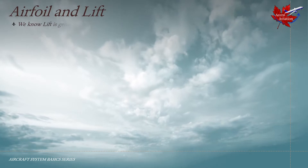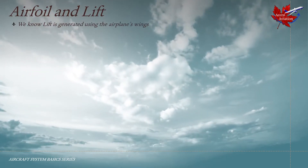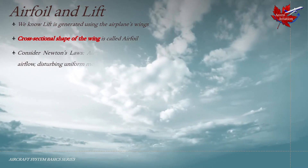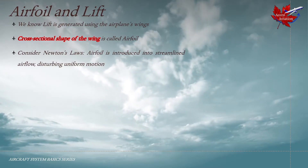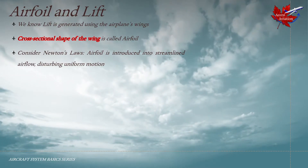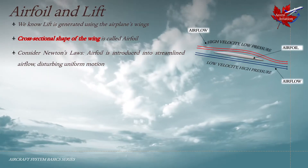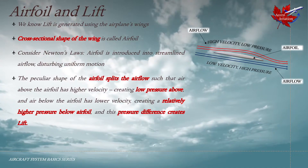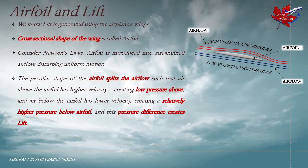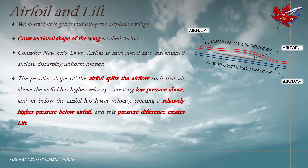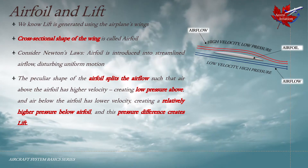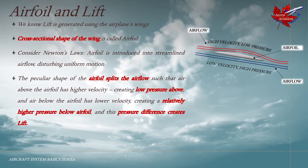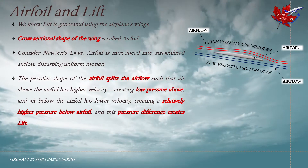Airfoil and lift. We know lift is generated using the airplane's wings. The cross-sectional shape of the wing is what is called an airfoil. Considering Newton's laws, the airfoil is introduced into smooth, streamlined airflow, disturbing uniform motion. The peculiar shape of the airfoil splits the airflow such that the air above the airfoil has higher velocity creating low pressure above, and air below the airfoil has lower velocity creating relatively high pressure below the airfoil, and this pressure difference creates lift.